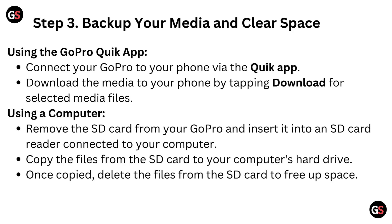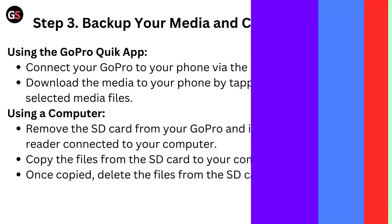Using the GoPro Quick App, connect your GoPro to your phone and download the media by tapping download for selected media files. Using your computer, remove the SD card from your GoPro and insert it into an SD card reader connected to your computer. Copy the files from the SD card to your computer's hard drive. Once copied, delete the files from the SD card to free up space.